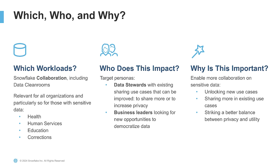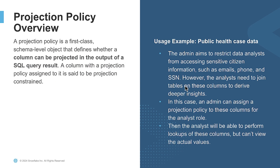This is important because it allows better collaboration on sensitive data using that balance between privacy and utility. Looking at projection policies in detail, these are first-class objects that live in a schema like other governance policies within Snowflake. These policies dictate whether or not a column can be shown in the output of a SQL query — a select statement, for example.